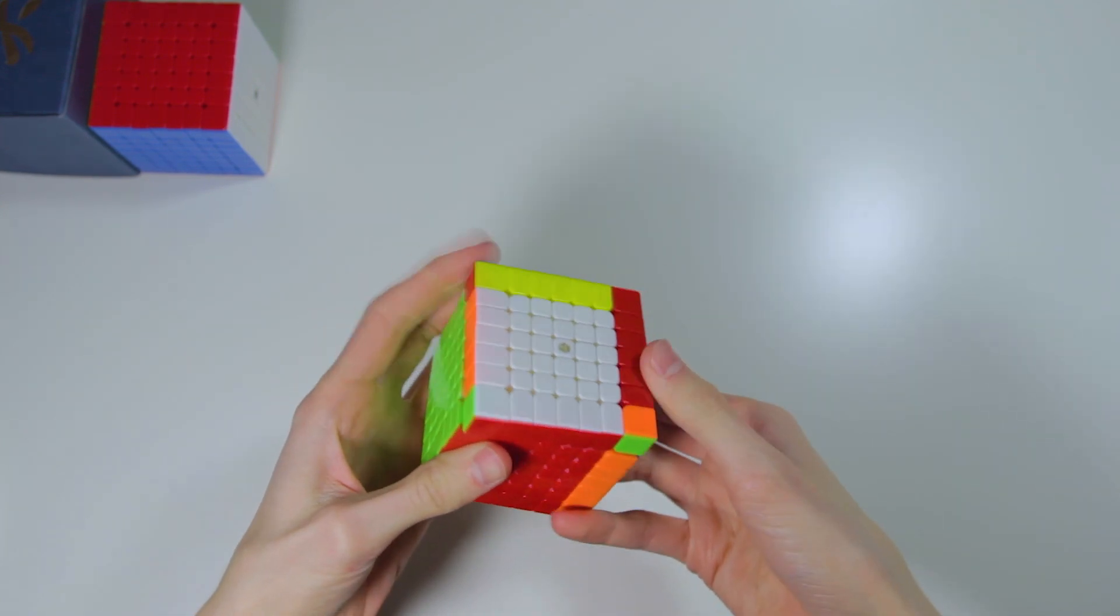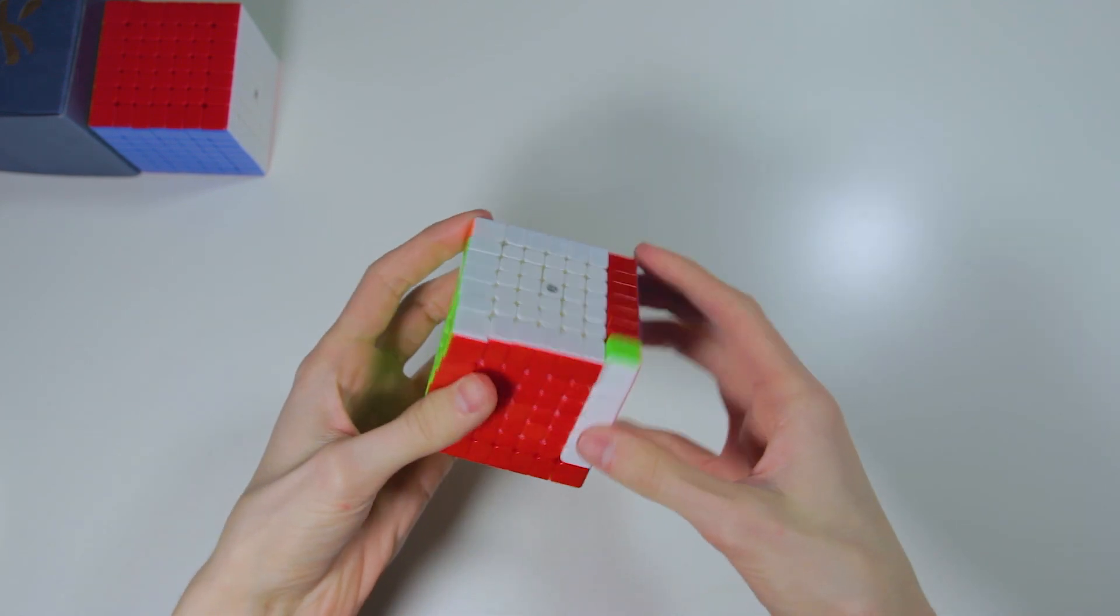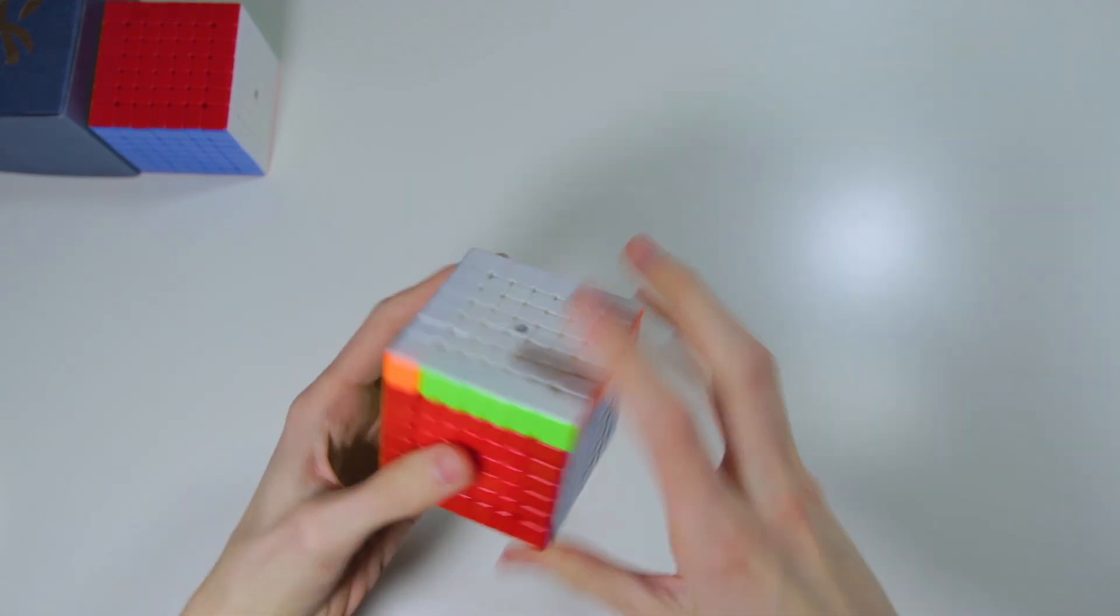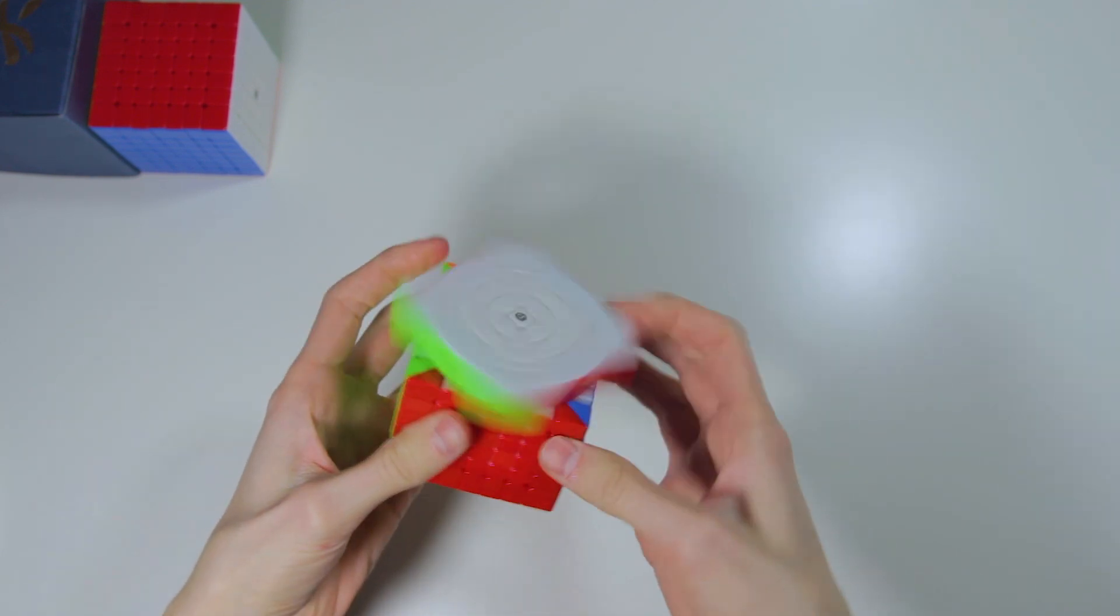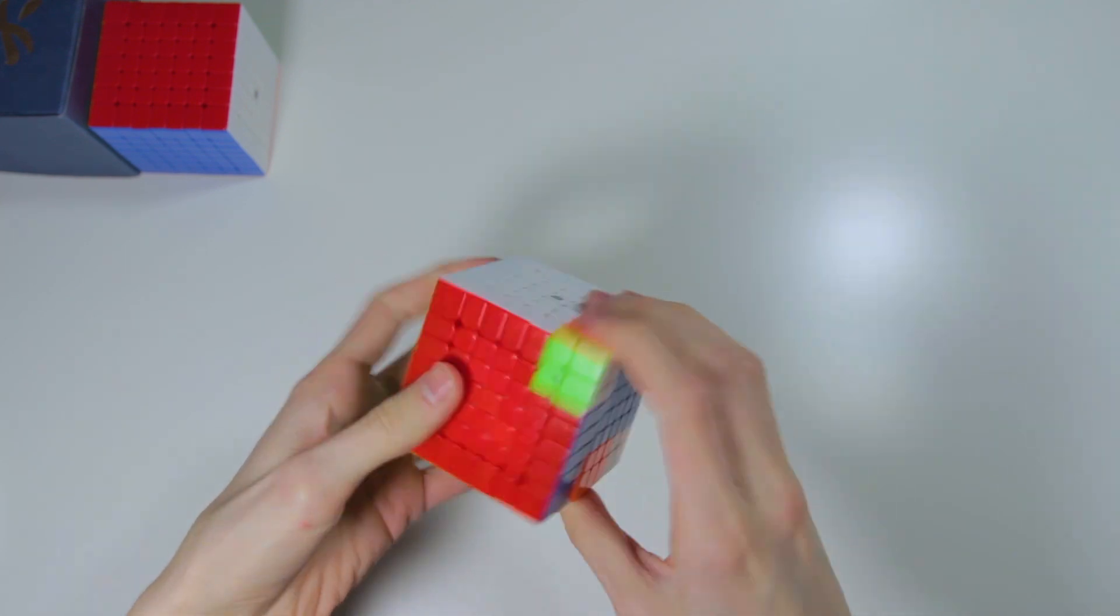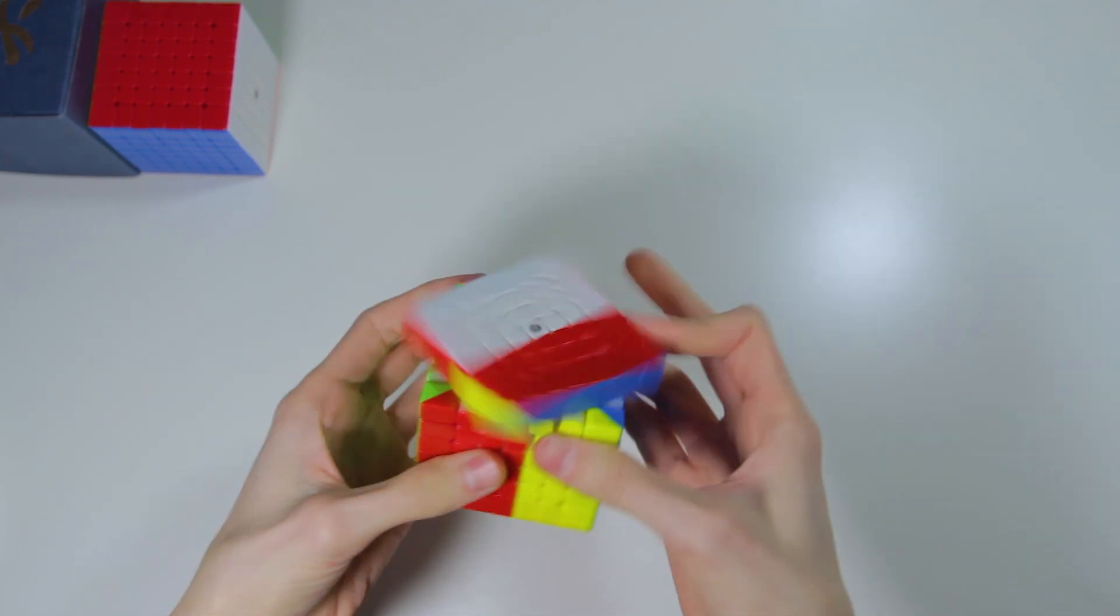It already feels like it could give my Haze 7M a run for its money, and I've broken that cube in for a while now. Of course, this cube is on much looser tensions than the Aofu GTS-M out of the box, so I'm sure that has something to do with the increased fluidity and speed of the Spark M right away.